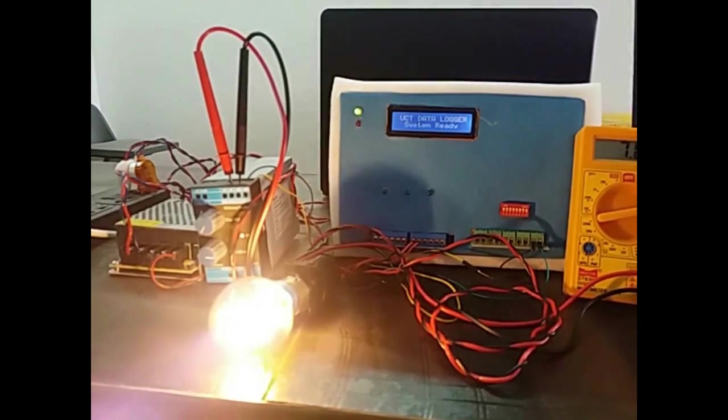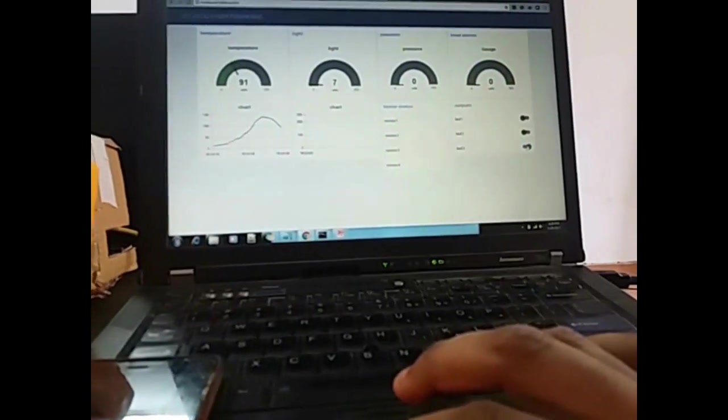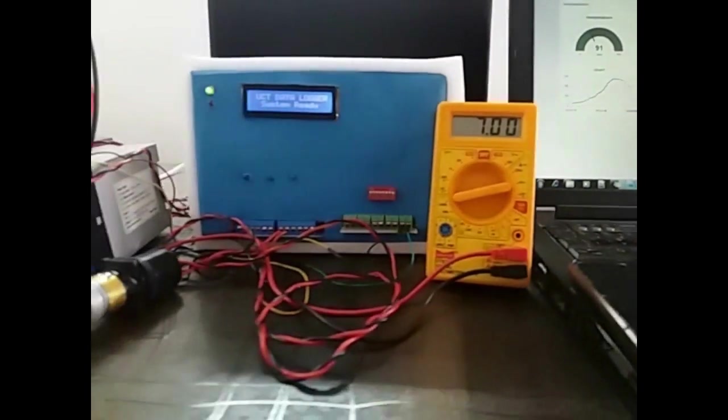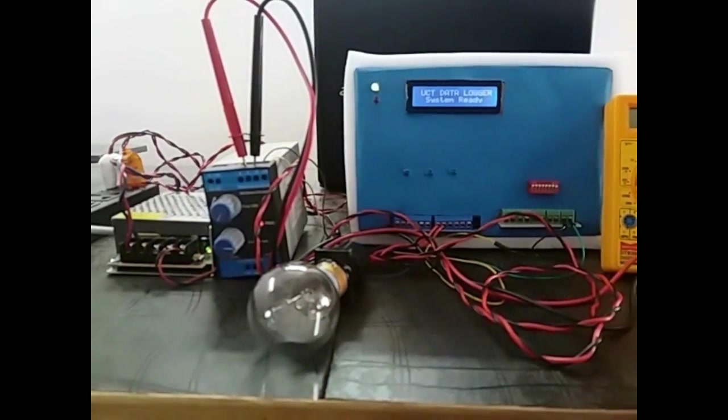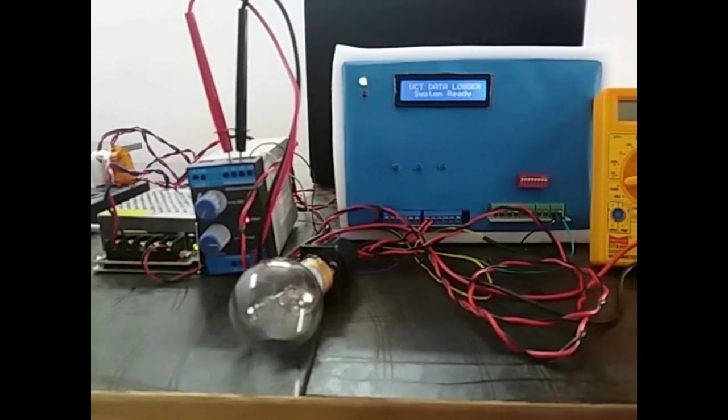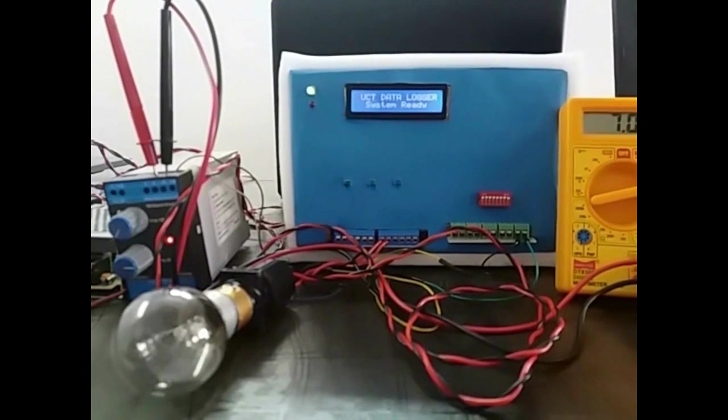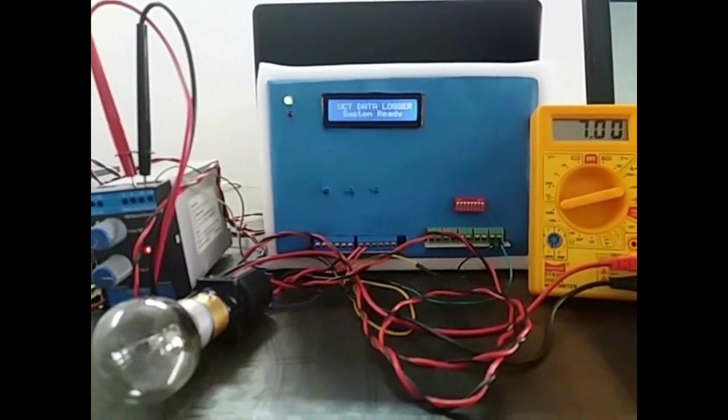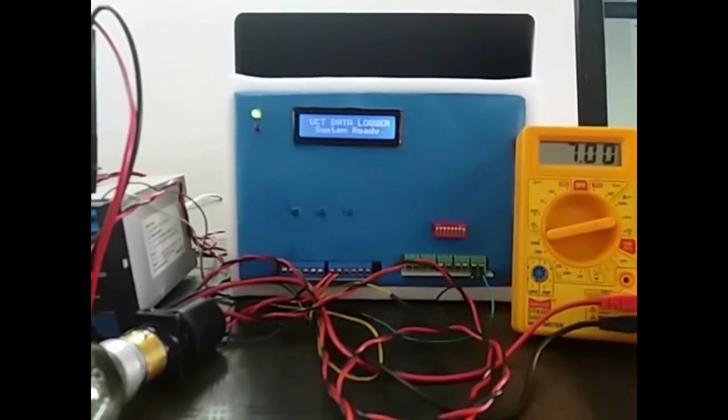As you can see, there is input terminal on prototype on which you connect all the inputs needed to be monitored. We have connected a light bulb which can be operated remotely using dashboard or mobile app. It also supports various other communication protocols such as RS485, RS232 and I2C connectivity for expansion modules.